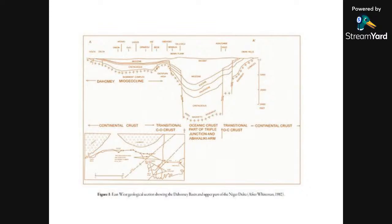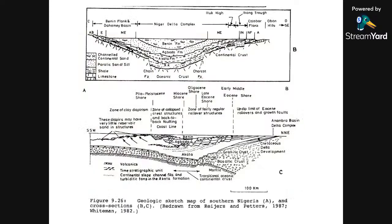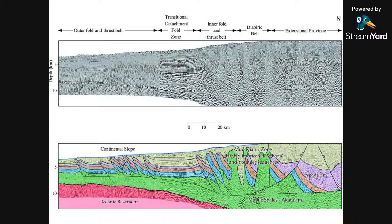Cross-sections of the Niger Delta show that its structures are within the sediments and do not involve the basement. The structures are controlled by mobile shales at the bottom of the Akata Formation. These mobile shales form a detachment unit where the upper sediments — mainly shales and continental sands — form either extensional structures near shore or contractional structures offshore, due to the instability caused by rapid sediment loading in a rapidly subsiding basin.